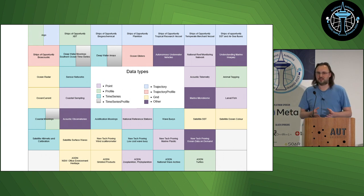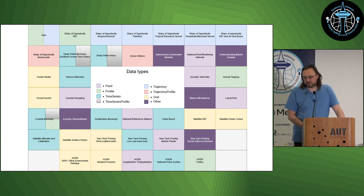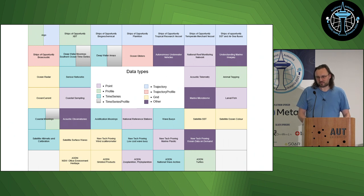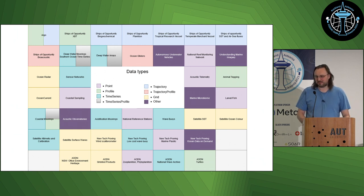In addition to those different physical styles of measurement, we've got a lot of different types of data: profile data, point data, and time series data. That makes our job difficult — we have to represent all of these in a consistent manner. Traditionally we've done that via NetCDF files, which is a very common format in marine sciences. Some domains don't like it at all, but we've settled on NetCDF because it can represent all these different types.